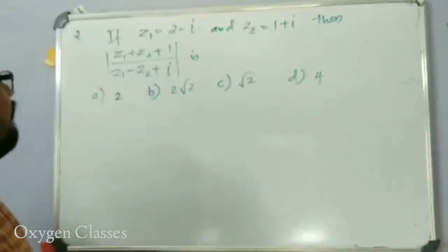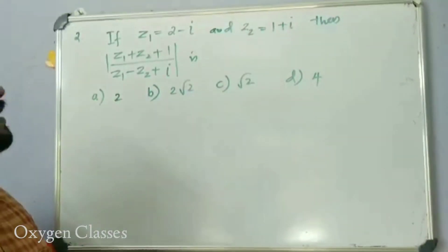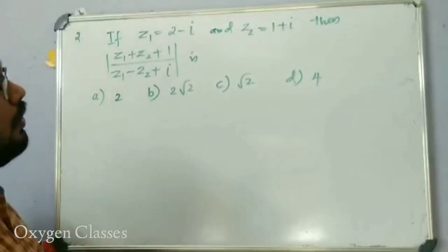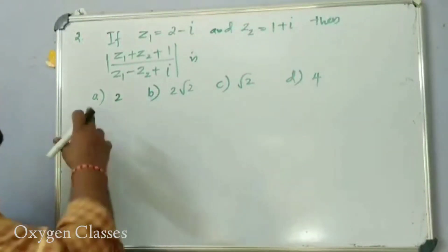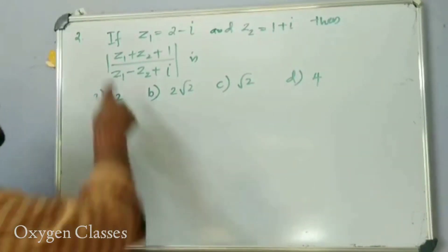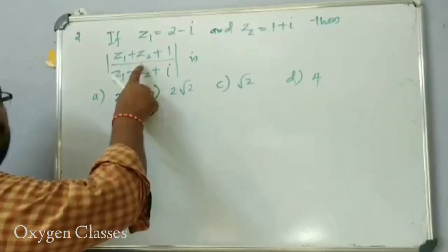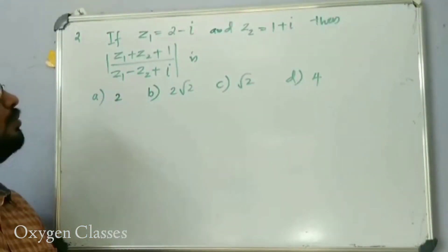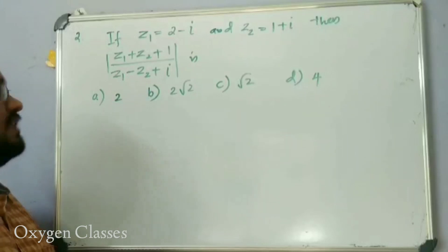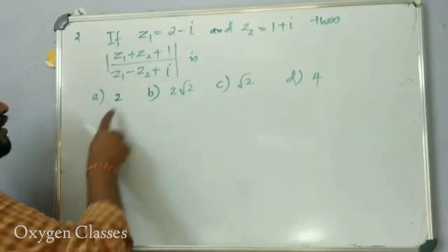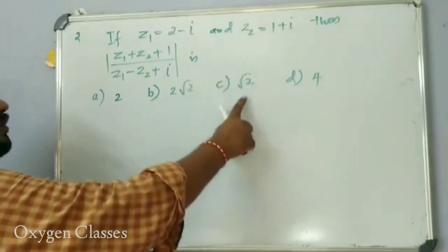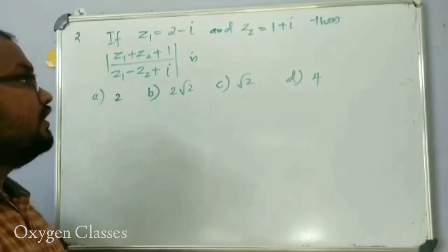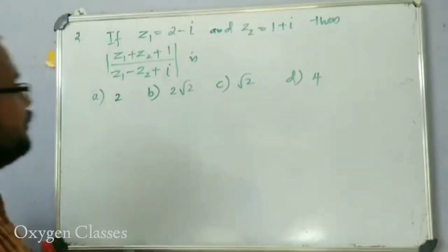Second question: if z1 equals 2 minus i and z2 equals 1 plus i, then find the modulus of (z1 plus z2 plus 1) divided by (z1 minus z2 plus i). Options are: 2, 2 root 2, root 2, and 4. The correct answer is 2 root 2. We will substitute the given values.